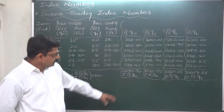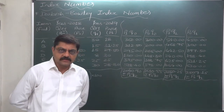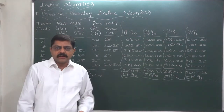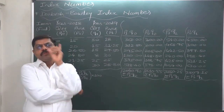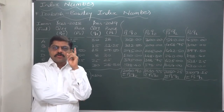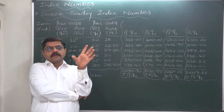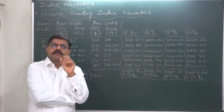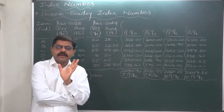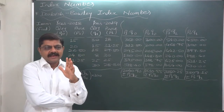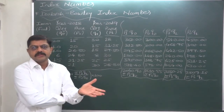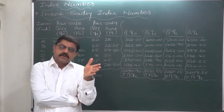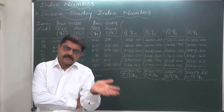If you need to calculate Dorbish and Bowley's index number or Fisher's index number, you have two alternatives: either calculate directly by the formula, or first calculate Laspeyres' and Paasche's index numbers. But mind well, if you are going to get Fisher's or Dorbish and Bowley's index number through Laspeyres and Paasche's index numbers, please check your workings carefully so that you are confident about their correctness. Because if you have made any error in either, your Fisher or Dorbish and Bowley index number will automatically be incorrect.